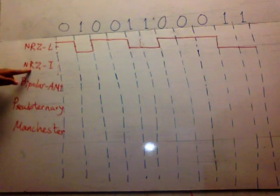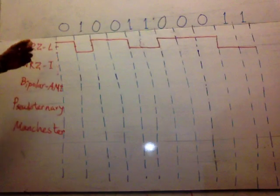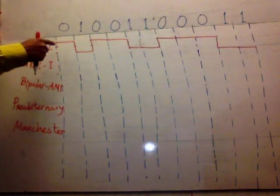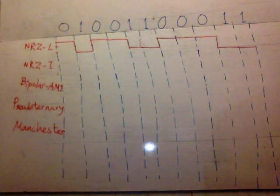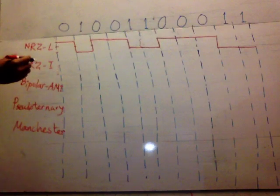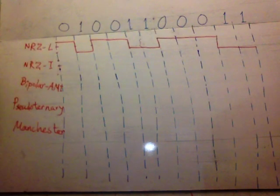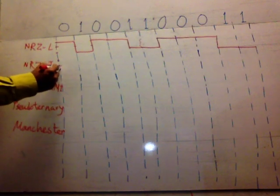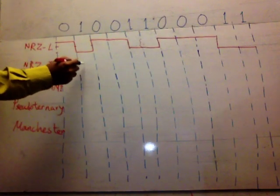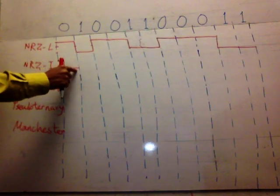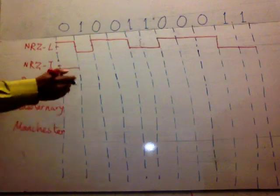Now let's discuss NRZ inverted. In this case, zero means no transition at the beginning of the interval, and one means transition at the beginning of the interval. Transition means you invert the state — from high to low or from low to high. Let's say initially we are at low level. Because the first data is zero, we don't make a transition. Because the next data is one, at the beginning of that interval, we must transition from low level to high voltage.